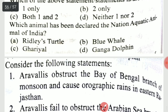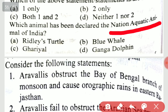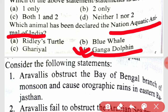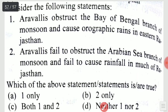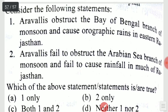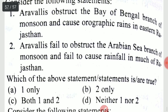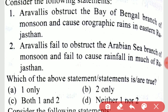Which animal has been declared the national aquatic animal of India? A very important question — it is the Gangetic dolphin. The Aravallis obstruct the Bay of Bengal branch of monsoon and cause orographic rains in eastern Rajasthan, but fail to obstruct the Arabian Sea branch of monsoon and fail to cause rainfall in much of Rajasthan. Both statements are correct.